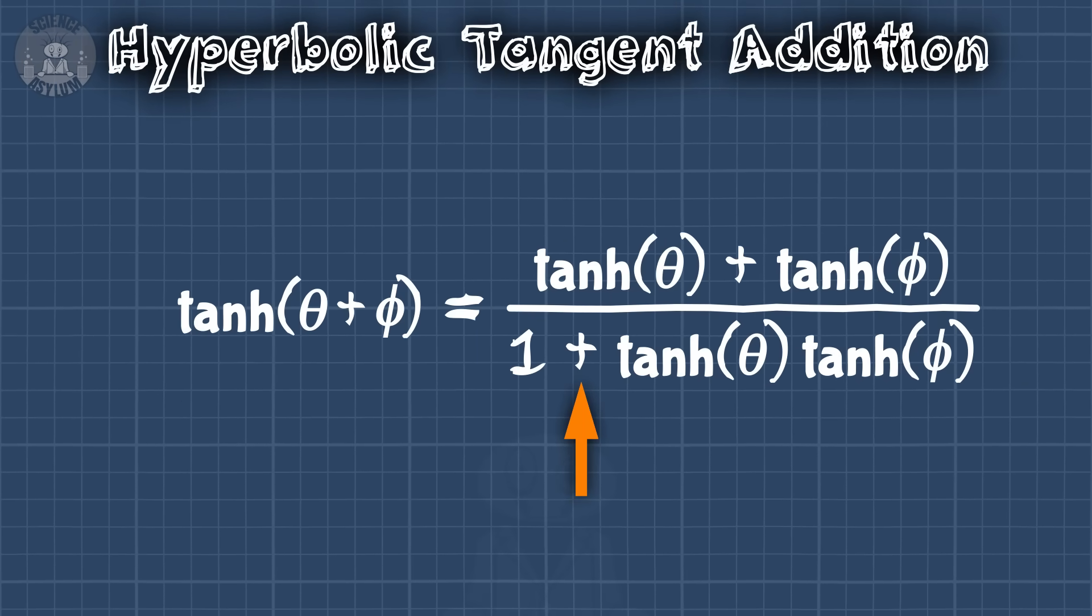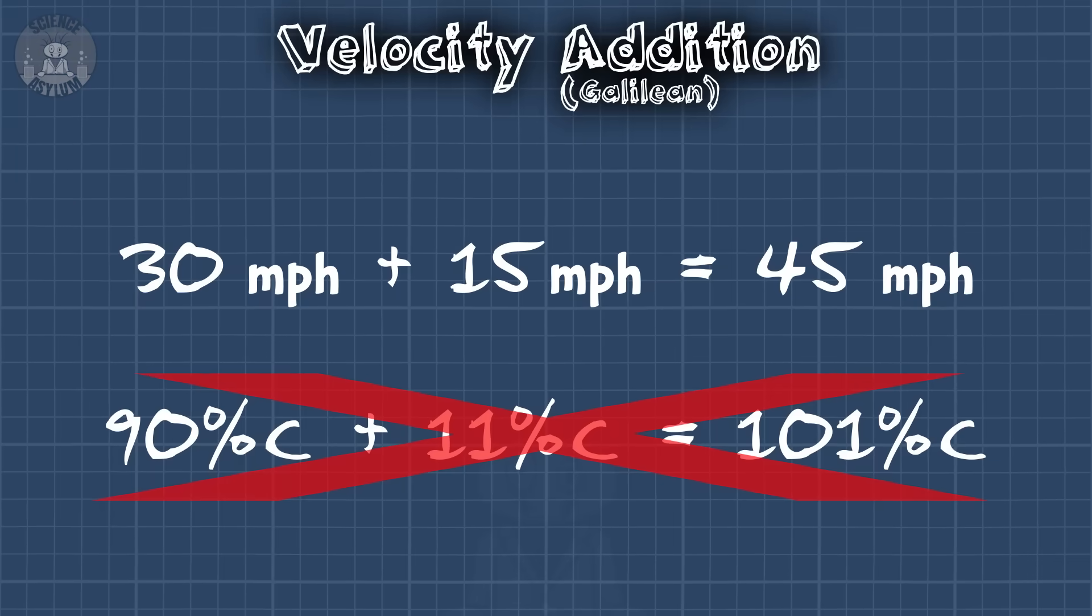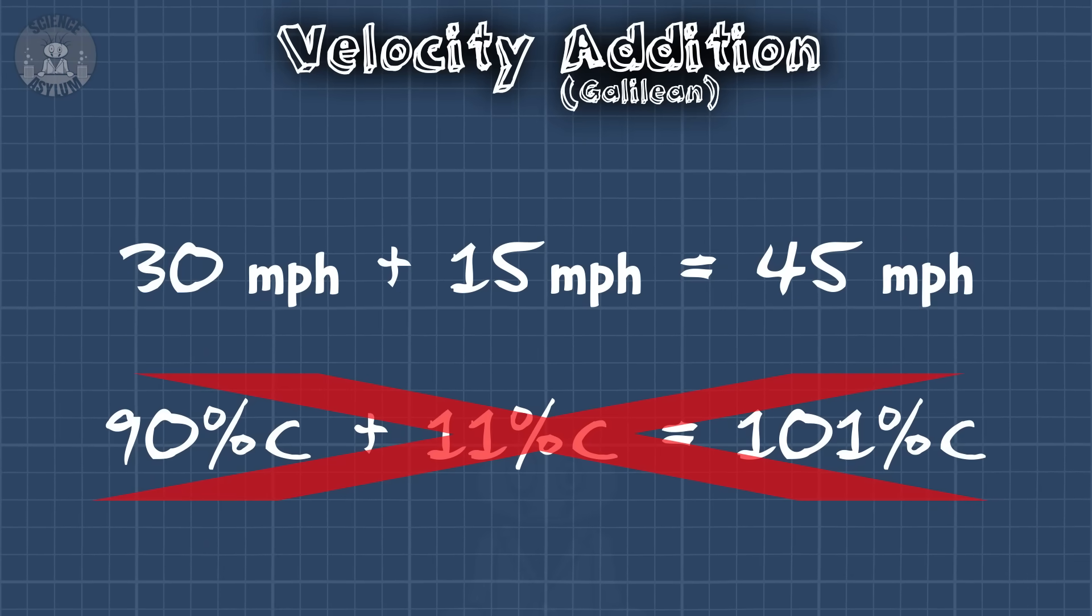If we swap out the tangents in here for hyperbolic tangents, we get a plus sign in the denominator. Isn't that a bit hand wavy? Yeah, maybe a little. Like, how do we know space time is hyperbolic? Oh, because of the speed of light. The speed of light is everything. Speeds added together for the car example, but not the rocket example. Why not? The speed of light.